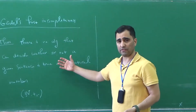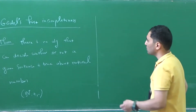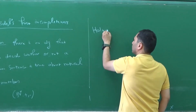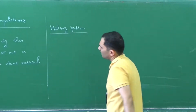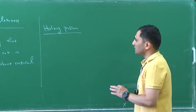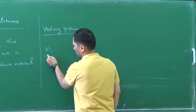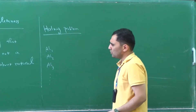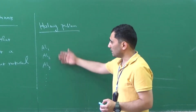Before getting into details of the proof of this theorem, I need to explain a famous problem in computer science. This is called the halting problem. Assume that I have listed every single computer algorithm here: algorithm 1, algorithm 2, algorithm 3, and so forth. You may convince yourself that the number of algorithms is countable, and I can list them here.